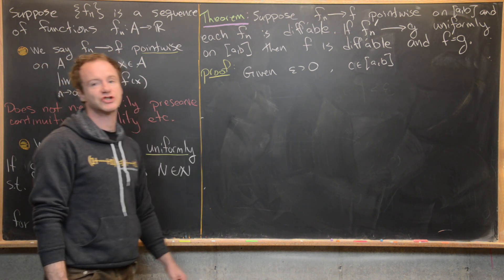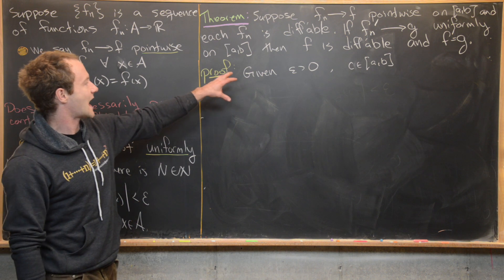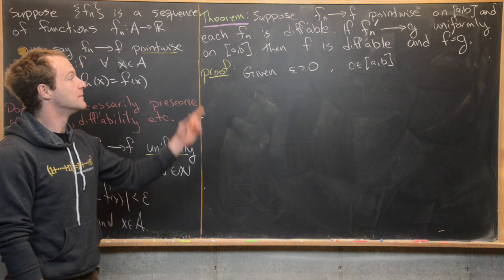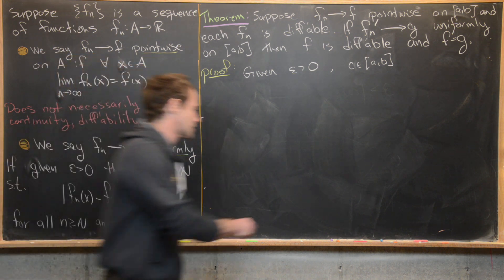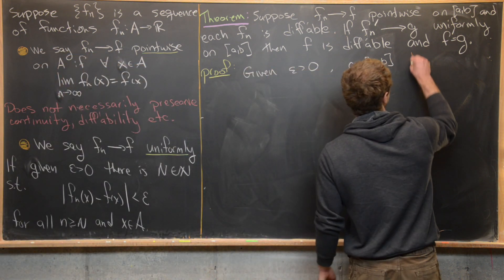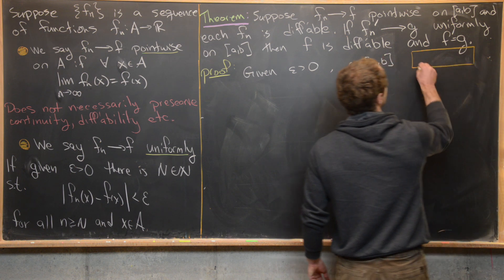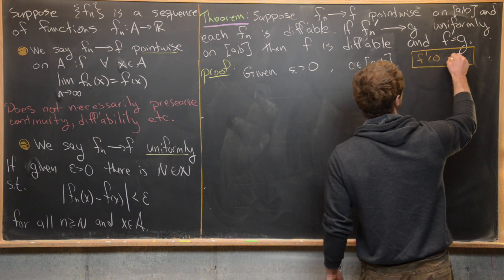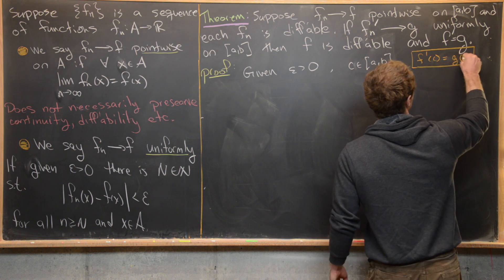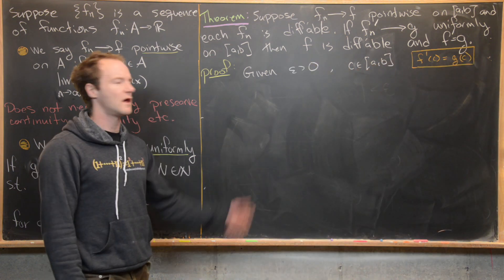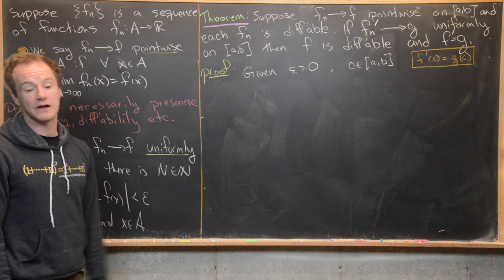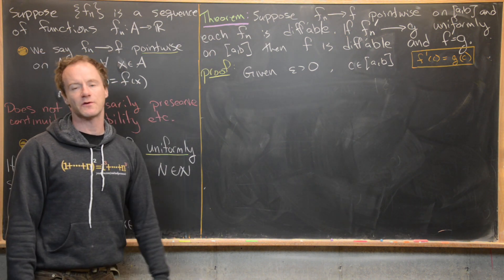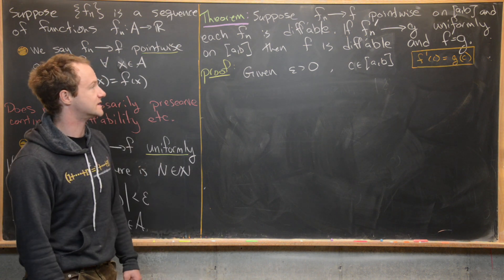Now let's launch into the formal proof. Given epsilon greater than zero and c in (a,b), we want to show that f'(c) equals g(c), interpreted through the epsilon-delta inequality from before. We'll use the given information to construct a couple of key quantities.